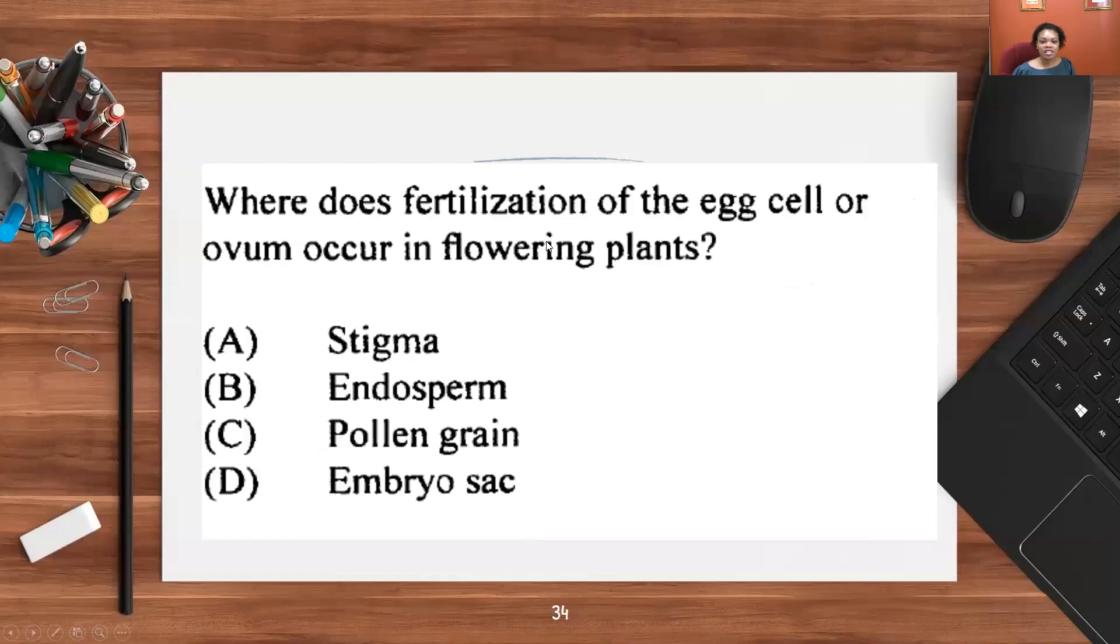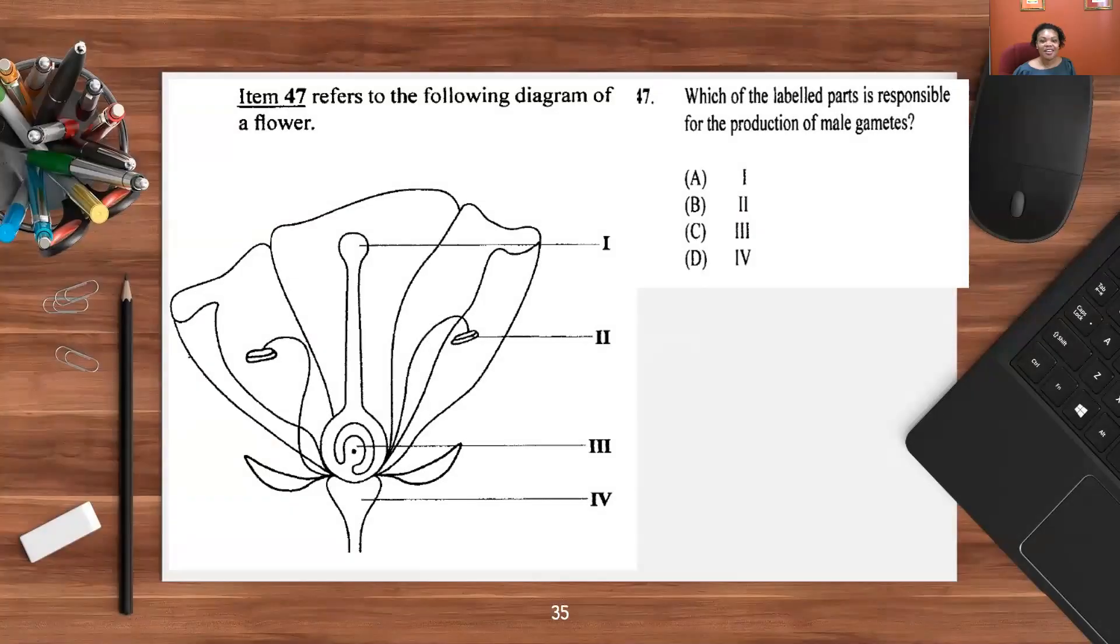Where does fertilization of the egg cell or ovum occur in flowering plants? A, stigma; B, endosperm; C, pollen grain; D, embryo sac. The answer is D. Refers to the following diagram of a flower, which of the labeled parts is responsible for the production of male gametes? One would be what? Stigma, and then you have the anther and the filament. Which of the parts is responsible for the production of male gametes? That would be number two, the anther. So answer is B.